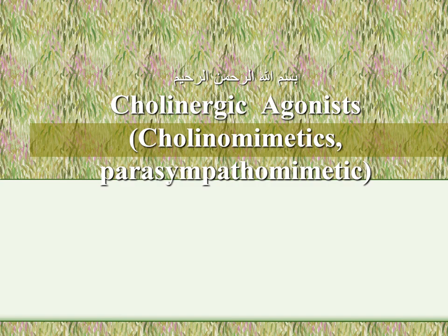The second type of acetylcholine receptors are the nicotinic receptors, which are also of two types: N-N type, which occur in autonomic ganglia, and N-M type, which occur at the neuromuscular junction. This concludes the review of cholinergic transmission from the last lecture. In this lecture, we will discuss cholinergic agonists — drugs that act as agonists on acetylcholine receptors, either muscarinic or nicotinic. They can also be called cholinomimetics because they mimic acetylcholine's action.